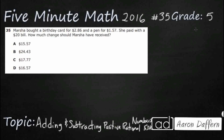So Marsha bought a birthday card — that's $2.86 spent on that — and a pen for $1.57. She paid with a $20 bill. How much change should she have received? So we have a real-life problem here with three different quantities: $2.86, $1.57, and $20.